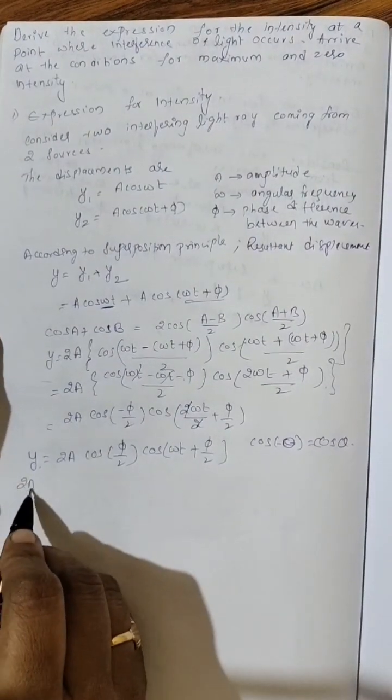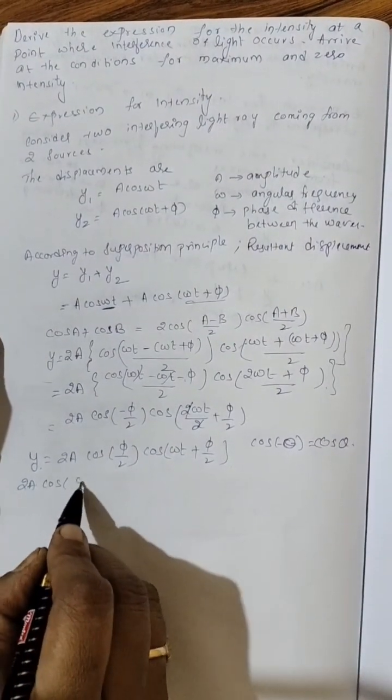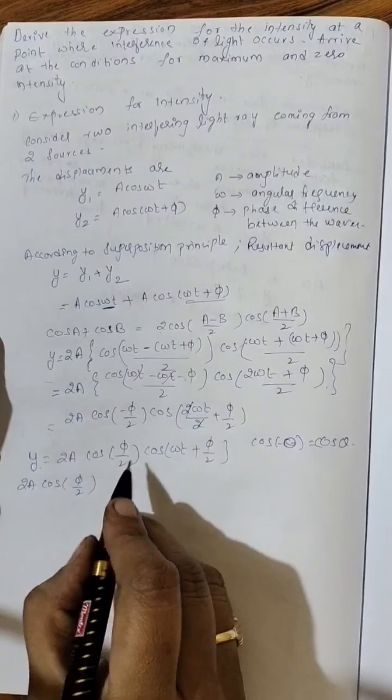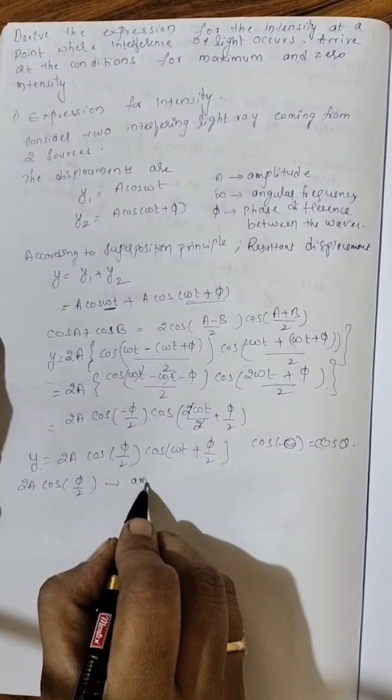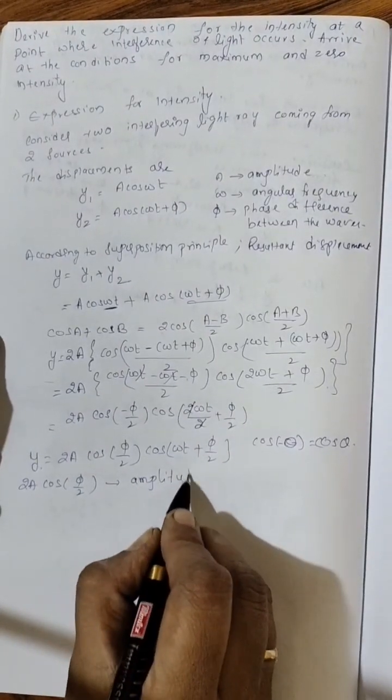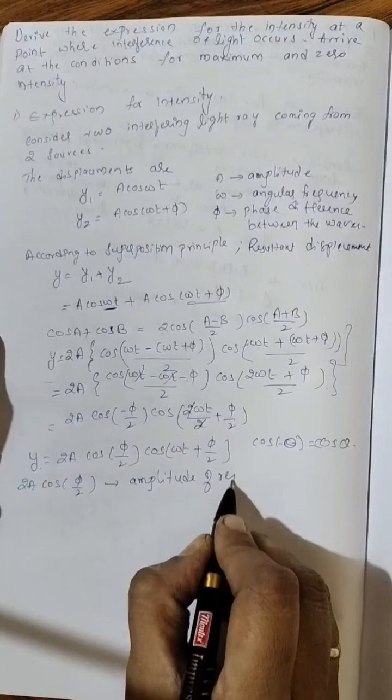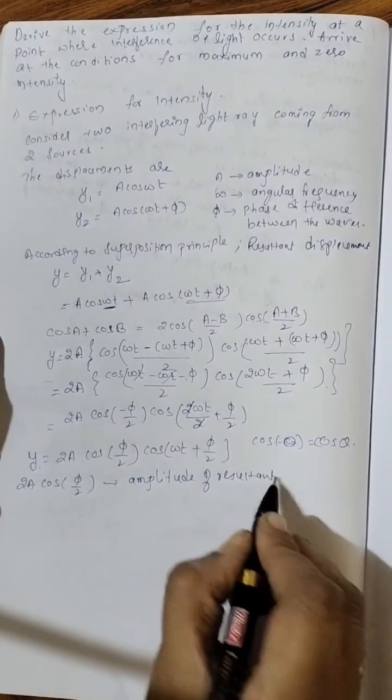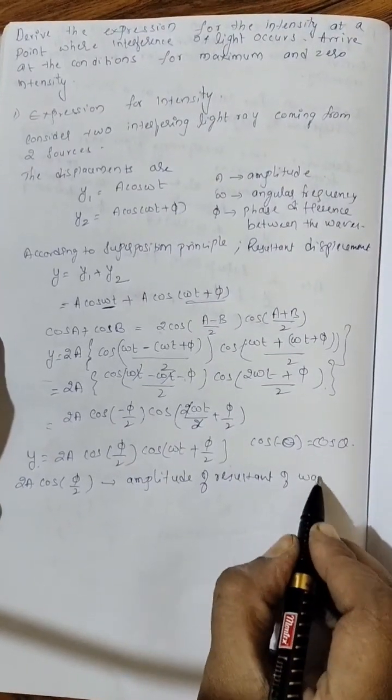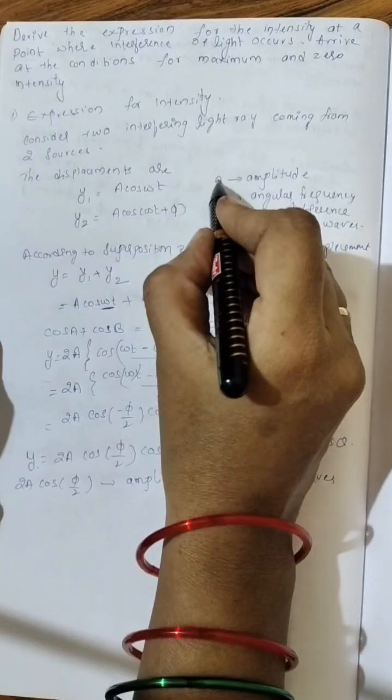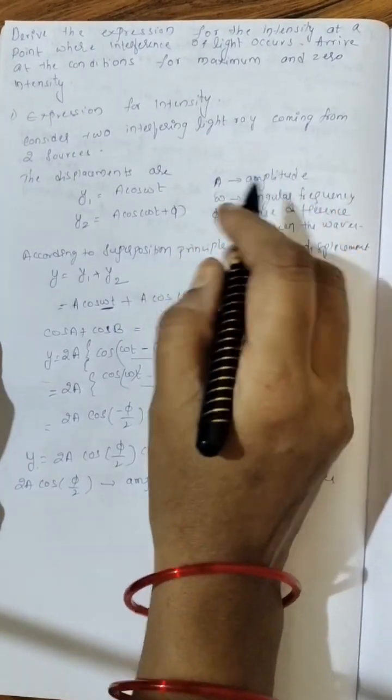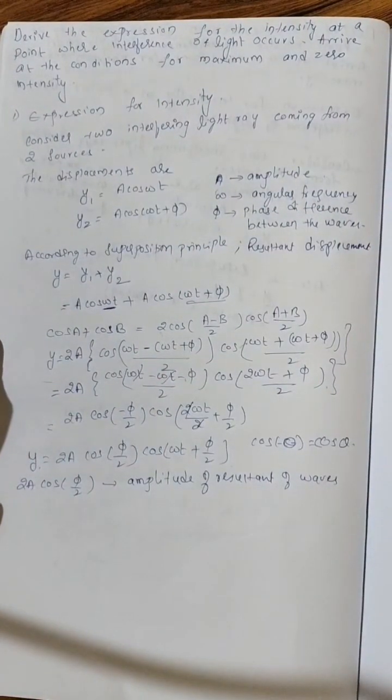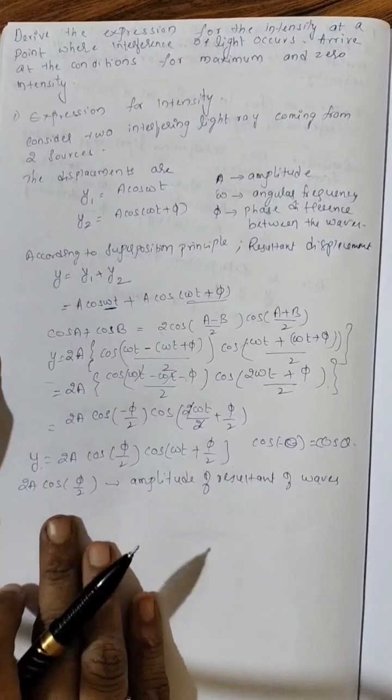Now, here 2A cos phi by 2 represents the amplitude of resultant wave. A is the amplitude of individual waves which amplitude is same. Now, this is amplitude of resultant wave.